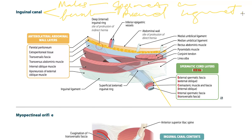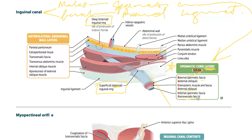The inguinal canal has two openings: the deep (internal) inguinal ring and the superficial (external) inguinal ring. The spermatic cord layers follow the ICE-T mnemonic: External spermatic fascia, Cremasteric muscle and fascia (from internal oblique), and Internal spermatic fascia (from transversalis fascia).